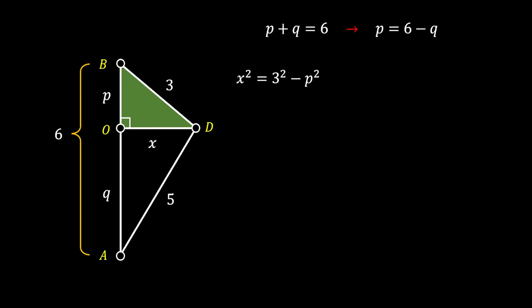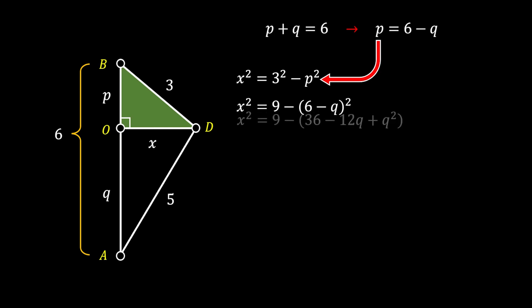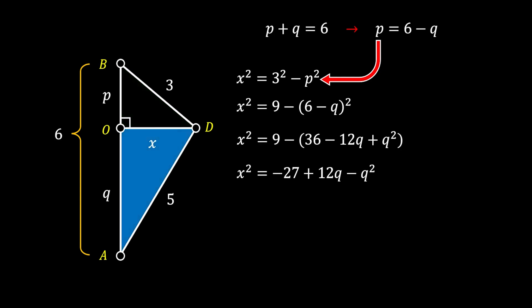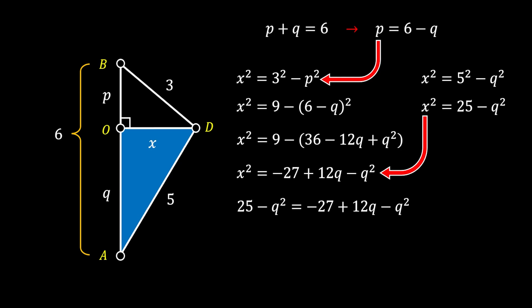So x² is equal to the hypotenuse 3² minus the leg p². We can substitute the value of p, which gives us 6 minus q, then expand using the square of a binomial and simplify to get a resulting equation. Now turning our attention to the other right triangle ODA, we again apply the Pythagorean theorem: x² = 5² − q², which means x² = 25 − q². We can now substitute this value of x² into our previous equation, leaving only one unknown, q.